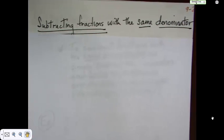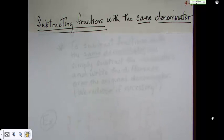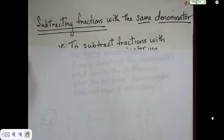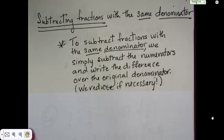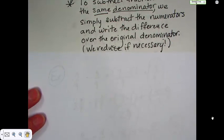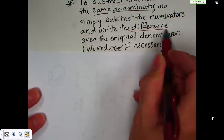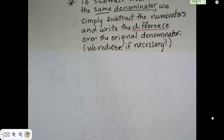Okay. So, now, we're now going to go to subtracting fractions, which is really very similar to adding fractions except just the opposite operation. And we're only going to talk about same denominators today. So, to subtract fractions with the same denominators, we simply subtract the numerators and write the difference over the original denominator and reduce if necessary.